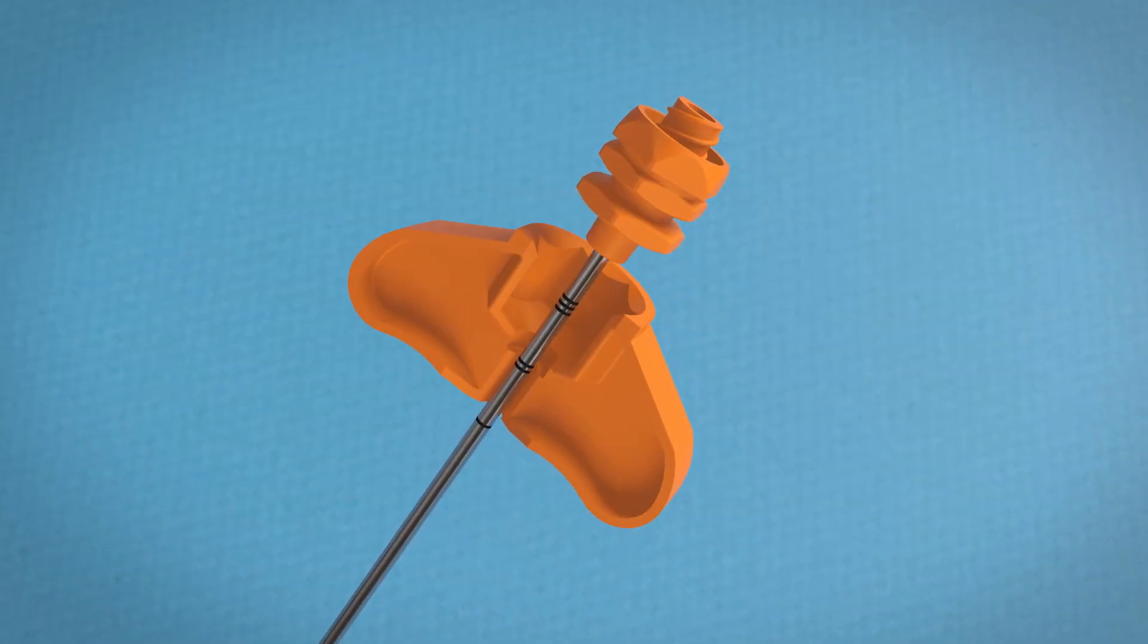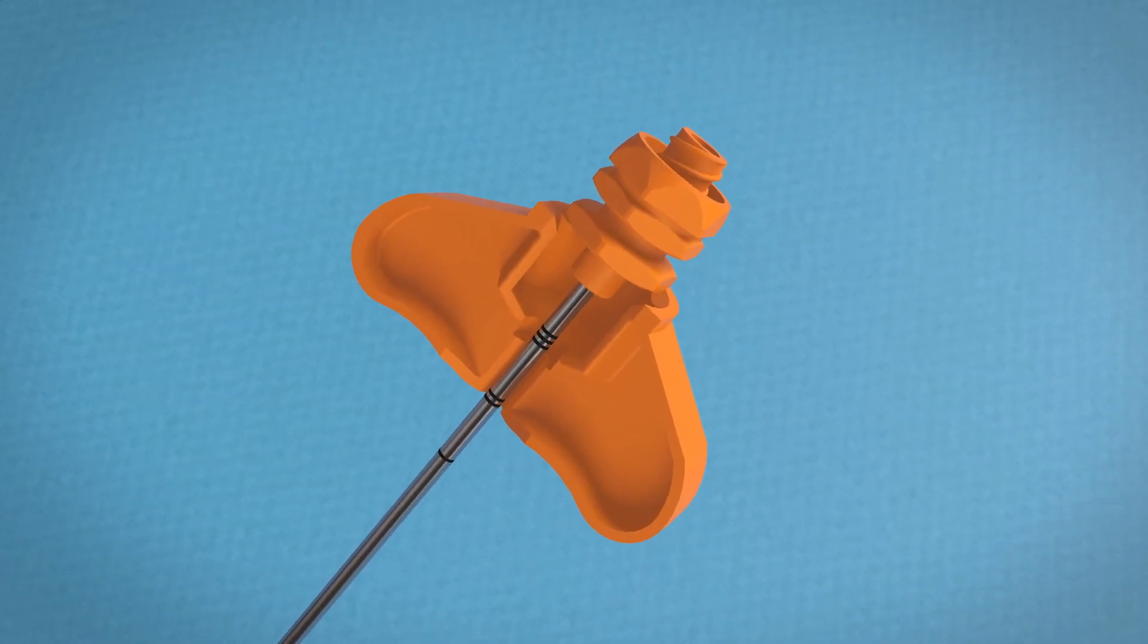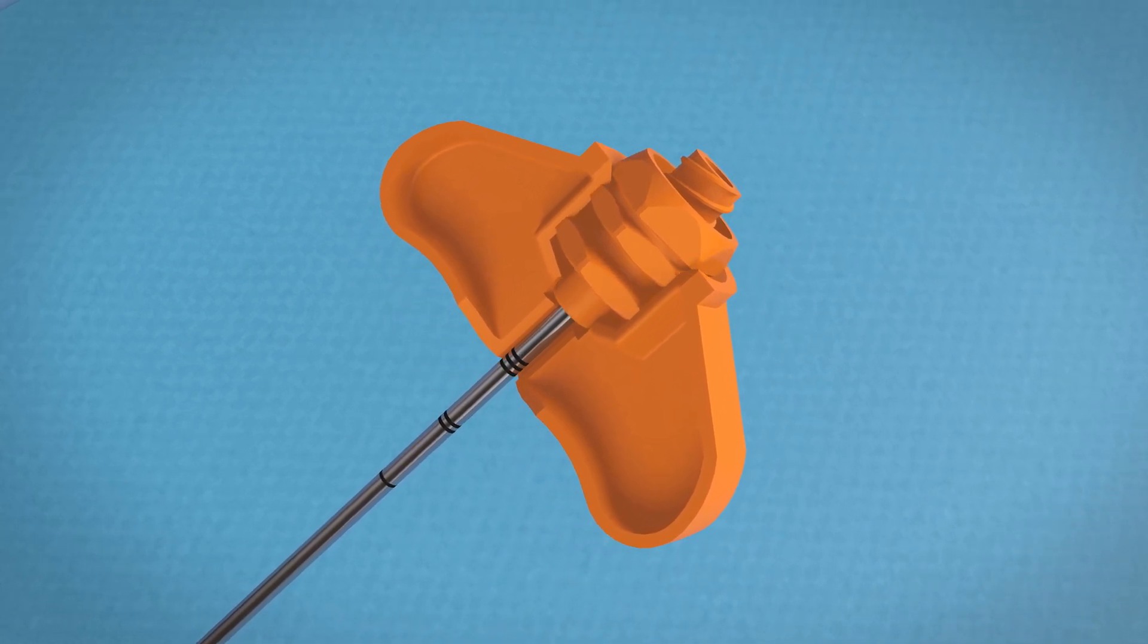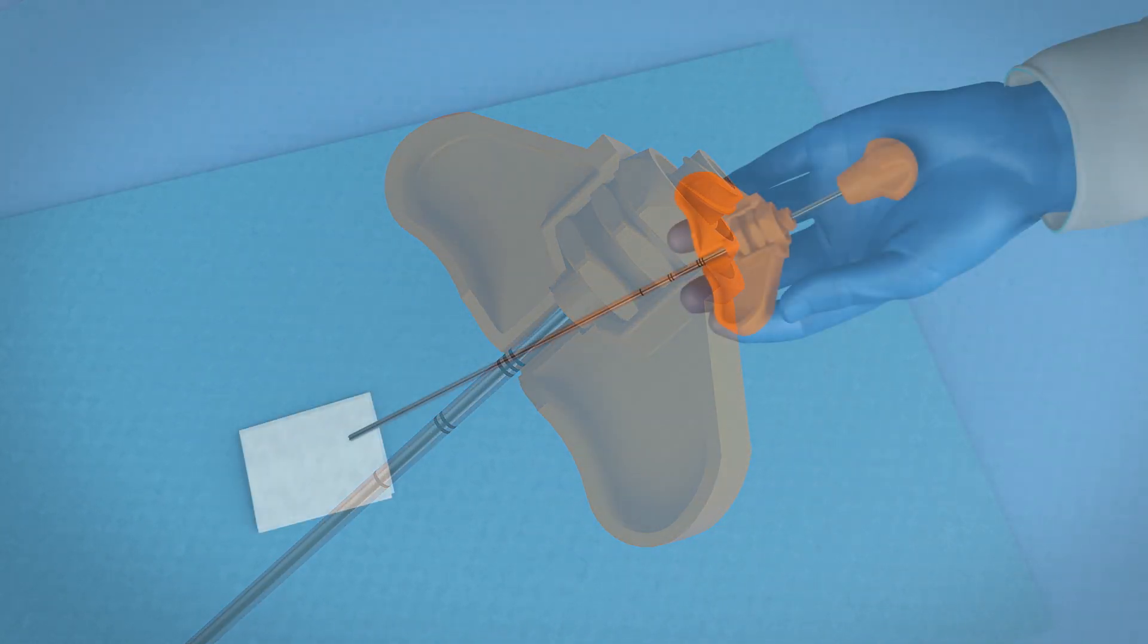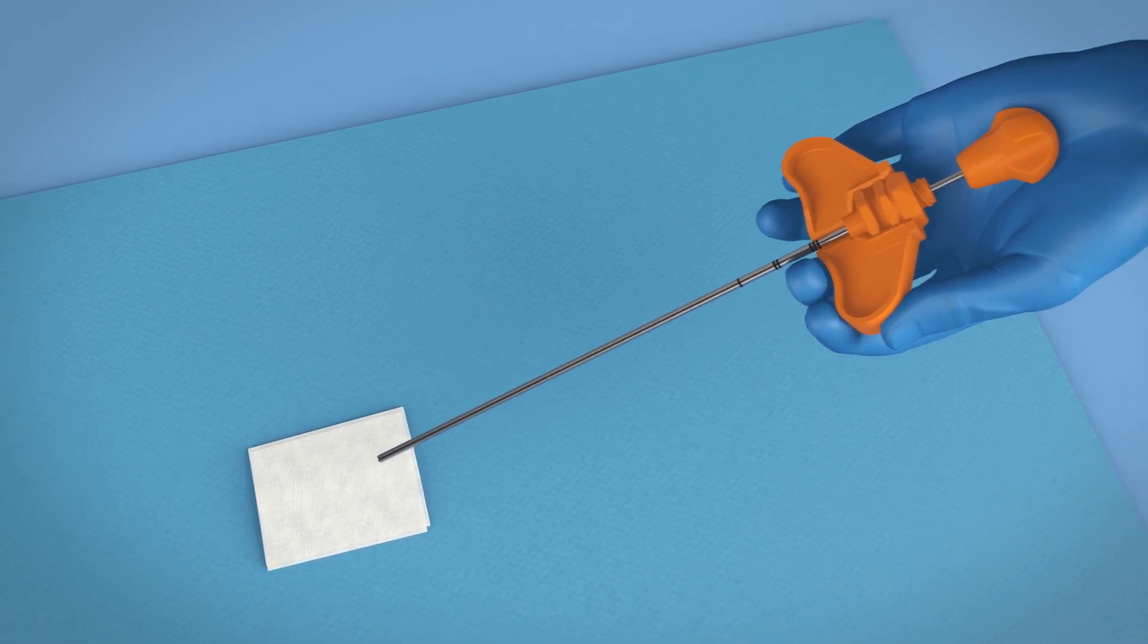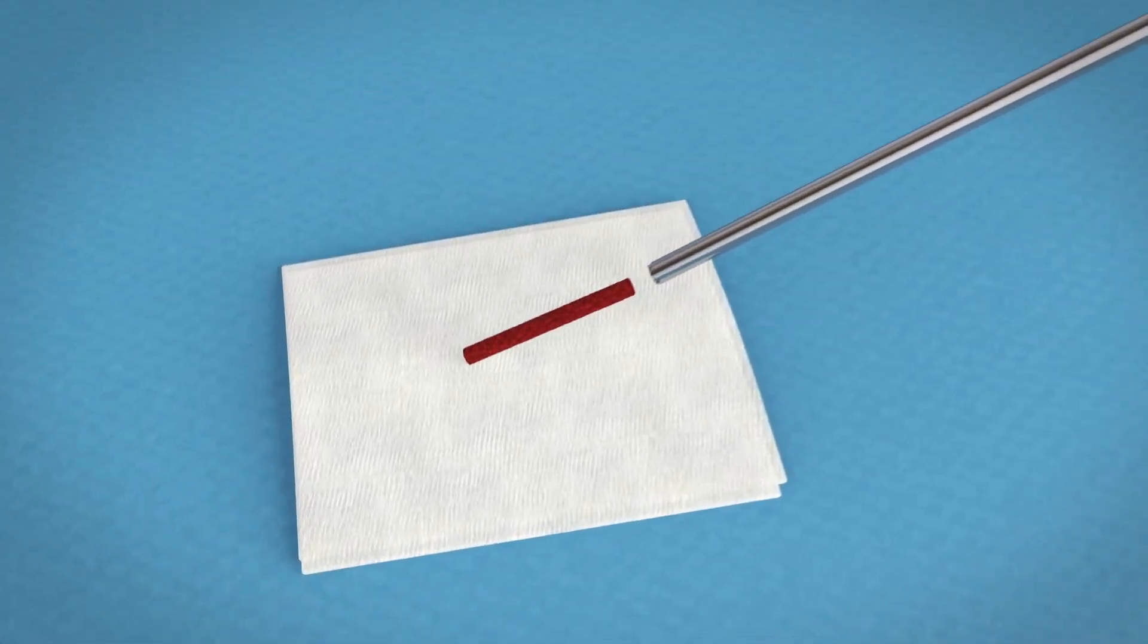If extraction is difficult, use the ejector assist by sliding up the cannula to the hub and click into place. Then, you may extract your core by pushing out of the distal tip.